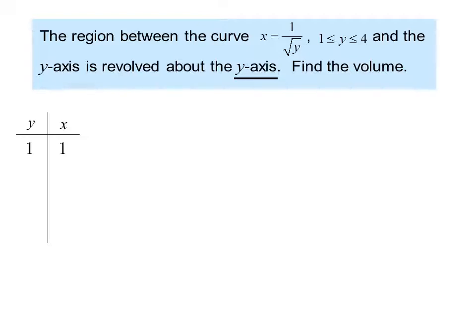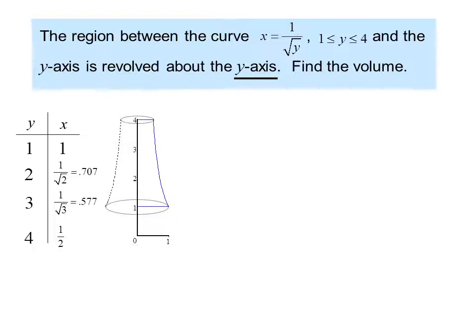If y is 1, x is 1. If y is 2, x is 1 over the square root of 2, or about 0.707. If y is 3, x is 1 over radical 3, or about 0.577. And if y is 4, x is 1.5. We sketch the shape and then revolve it about the y axis to get this lampshade shape.